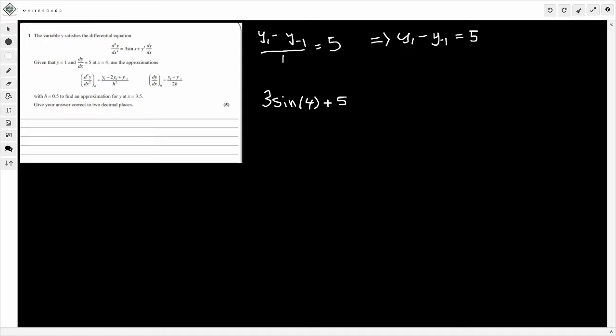So that's the left hand side, and this is equal, now we're going to make this equal to the approximation. So this is going to be equal to y1, minus 2 lots of y0. Your y0 is this initial condition here when y is 1, so that's going to be 2 lots of 1, so minus 2, plus y minus 1. And this is divided by h squared, so that's 0.5 squared which will give you 0.25.